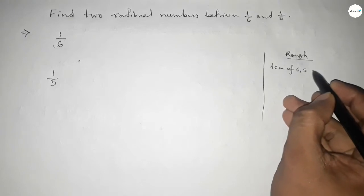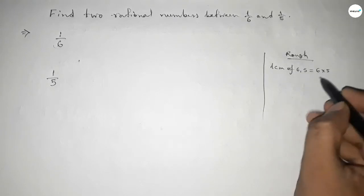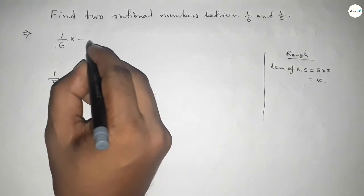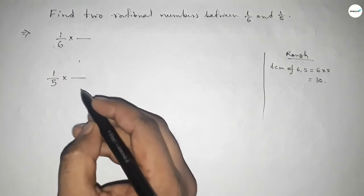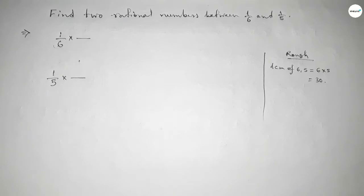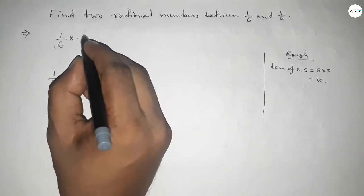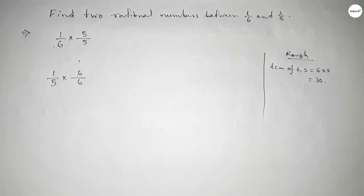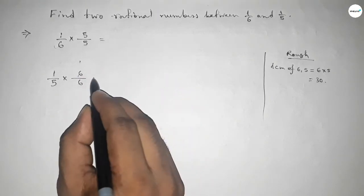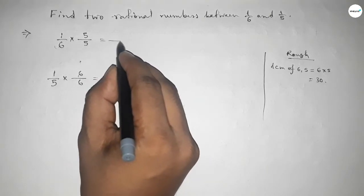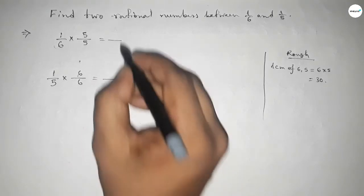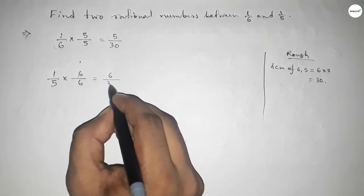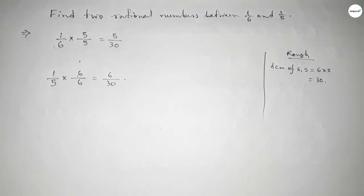The product of 6 and 5 is the LCM, which is 30. To get denominator 30, we multiply 1/6 by 5/5 and 1/5 by 6/6. This gives us 5/30 and 6/30.